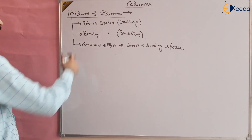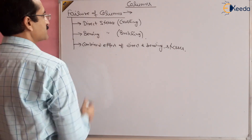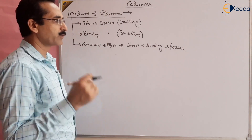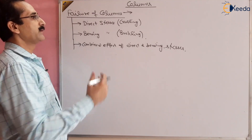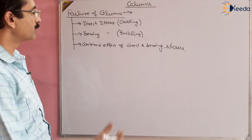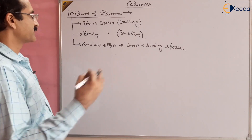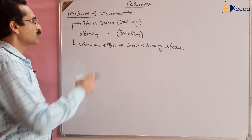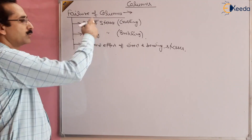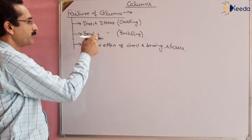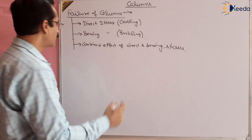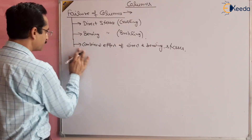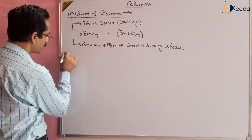So there may be three reasons for failure of a column, and based on that we have divided columns into three parts: short column, long column, and medium column.